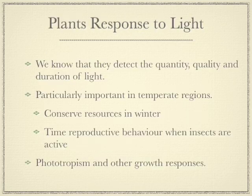But we're looking at light. We know that plants can detect the quantity, quality, and duration of the light, and they do that in the leaves with a variety of different pigments. It's very important in the temperate regions, where there's a distinct summer, autumn, winter, and spring, for plants to be able to detect and respond to the environment.